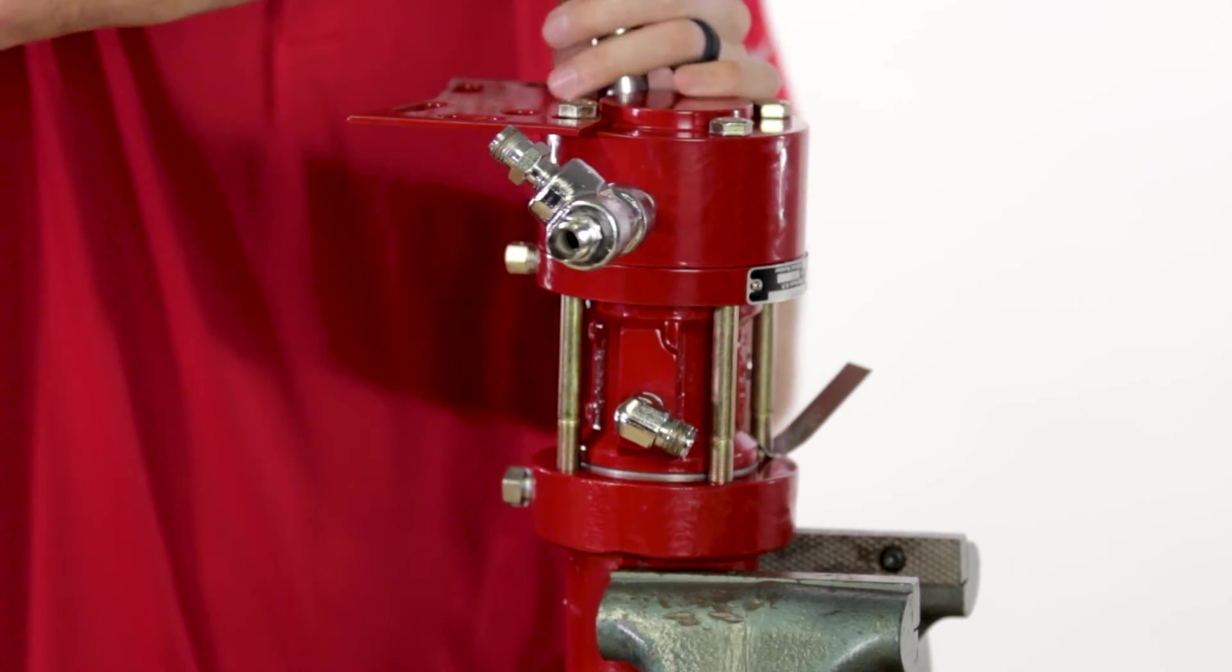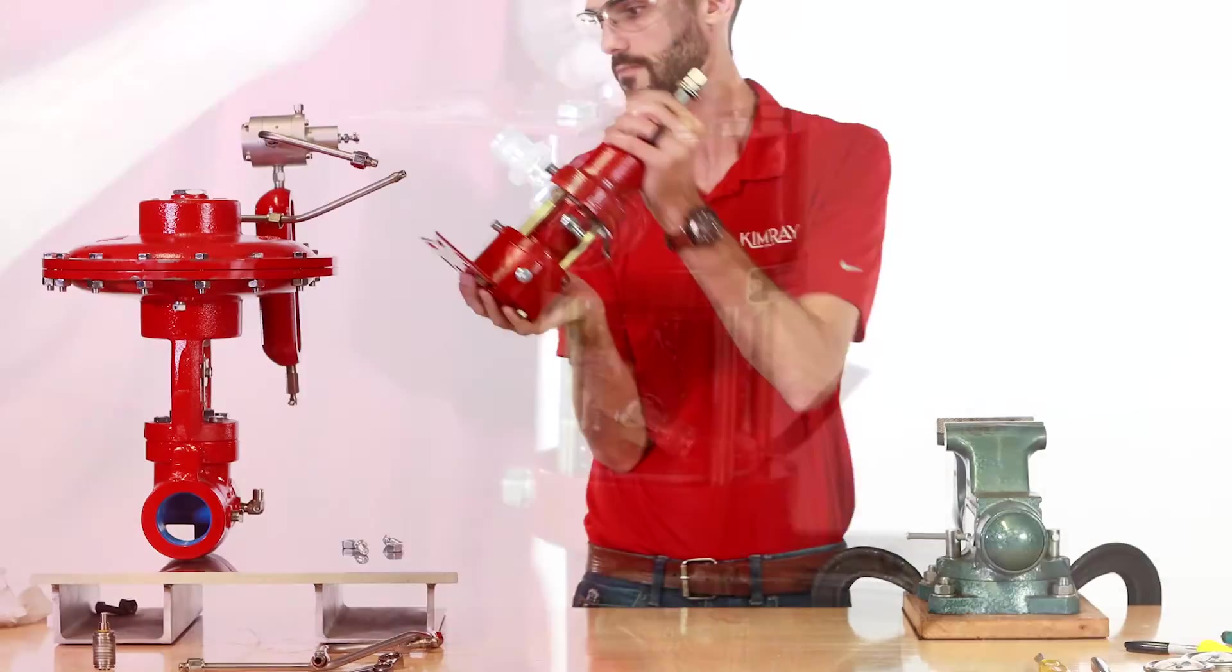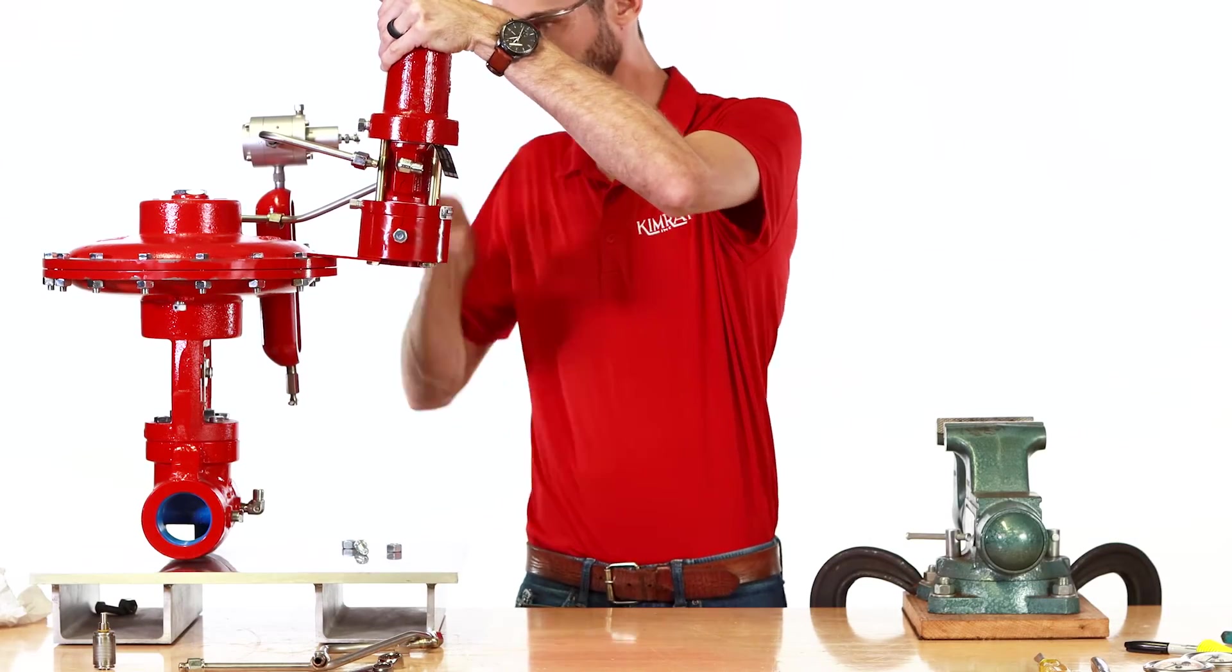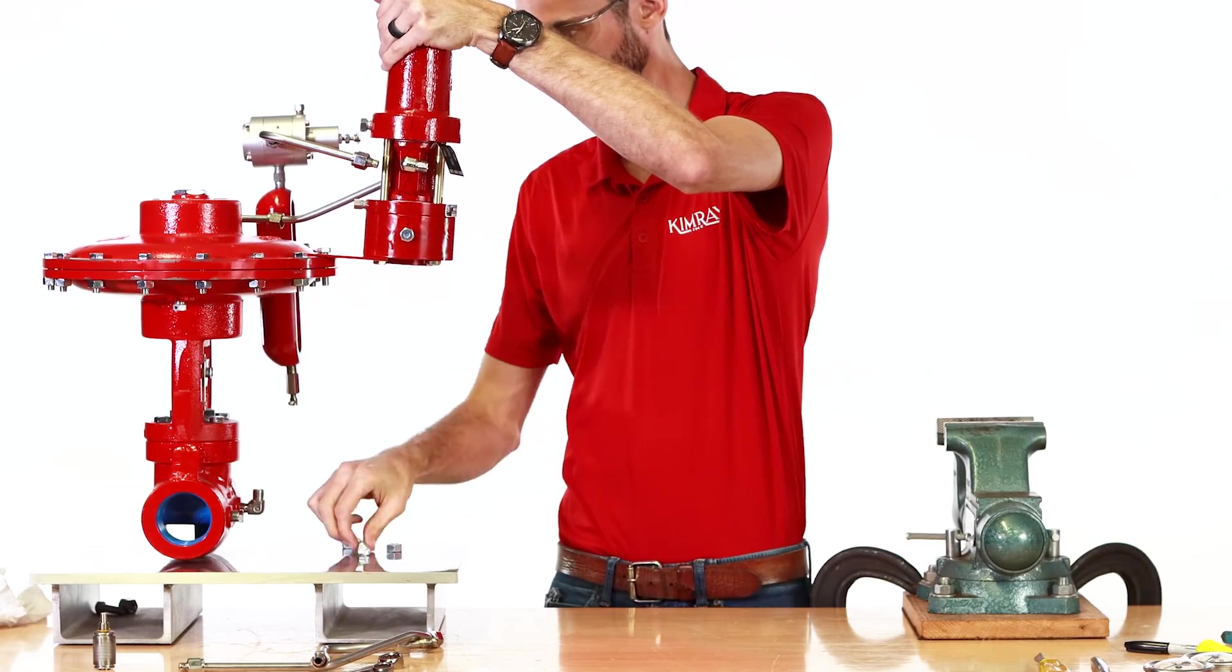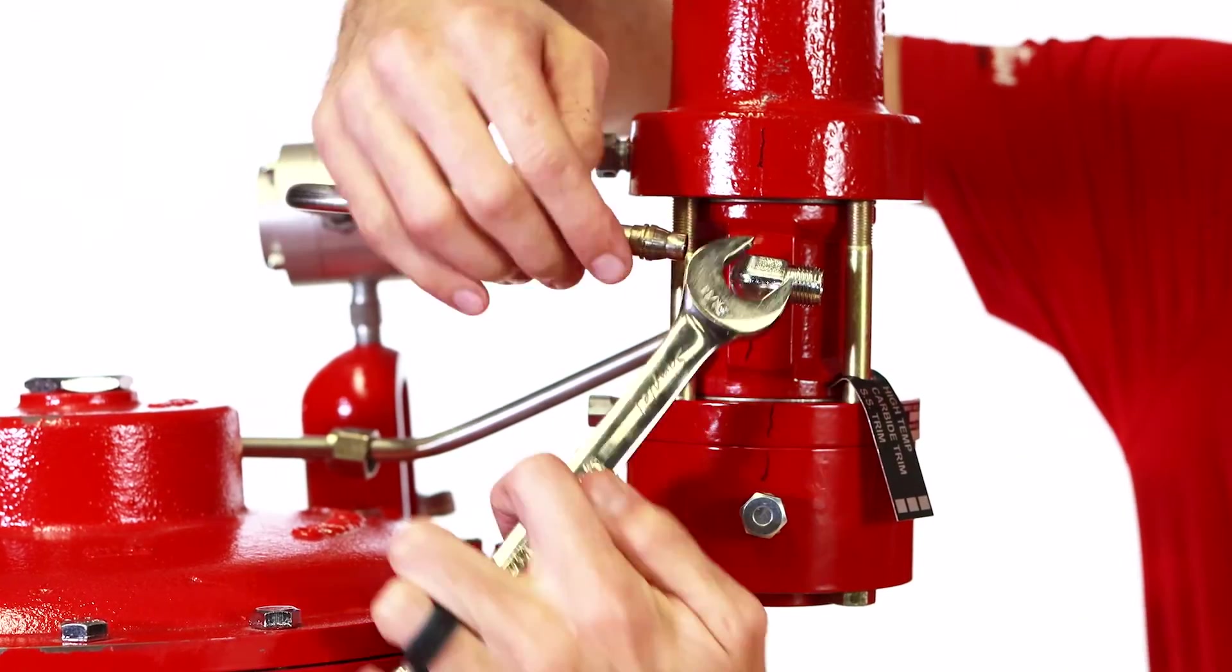At this point the pilot is ready to be attached to the control valve. However, if the pilot action is changing the valve fail position will also need to be changed. This will affect the tubing connections for the pilot output and the pilot sense line.